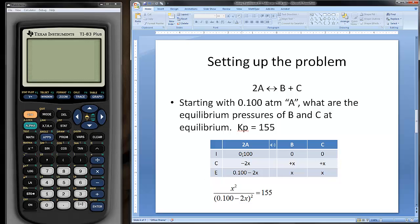We note that A starts at 0.1 molar. And B and C, because they're not mentioned in the problem and nothing said about initial concentrations, we assume that those values are zero.